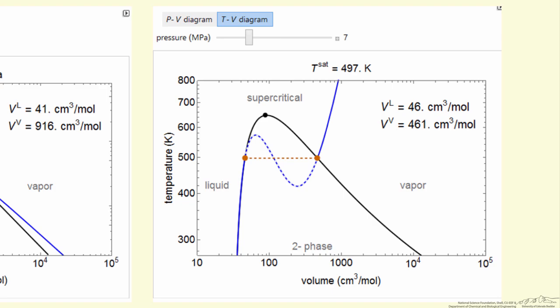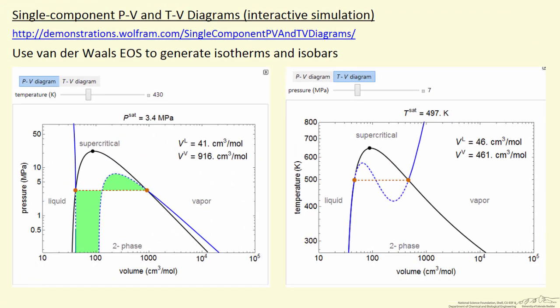On the left side, we can change the temperature and therefore look at a different isotherm. So we'll go and look at the interactive simulation to get a better understanding of these pressure volume and temperature volume diagrams. Remember, this is for a single component that we're modeling by a cubic equation of state.